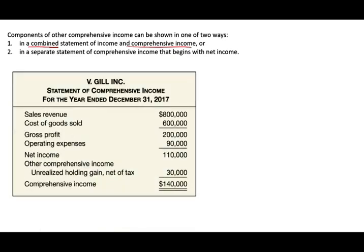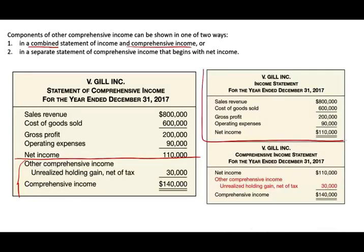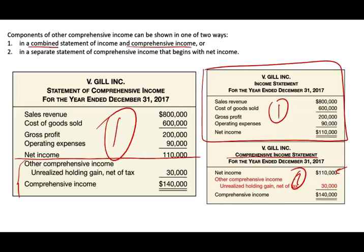Let's start talking about the components of other comprehensive income. We learned in a prior chapter that we have a one-step and a two-step approach for presentation. We can show comprehensive income in a combined statement of income and comprehensive income — that's one statement — or we can show comprehensive income in a separate statement starting with net income. Visually, the combined approach is one statement, while the separate approach gives us two statements.